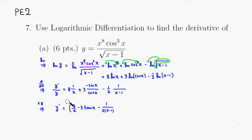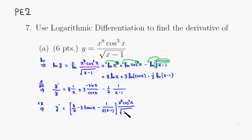Using square brackets to avoid confusion with the parentheses already used, we multiply by y — substituting the original function: x to the 8th times cosine cubed of x, over the square root of x minus 1. That's the derivative. It looks a bit complicated, but this is the correct derivative we are looking for. That's it — I hope that was clear.